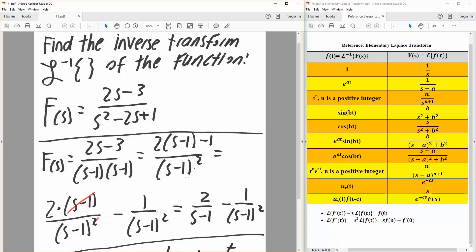By doing this, we can cancel this s minus 1, and we would have 2 divided by s minus 1 minus 1 divided by s minus 1 squared.